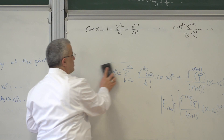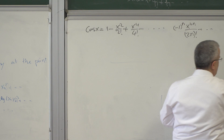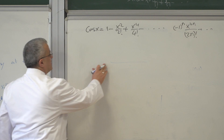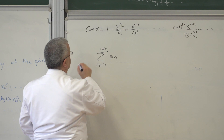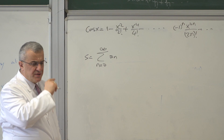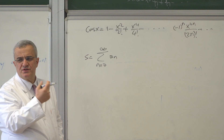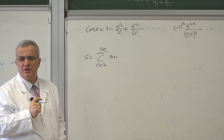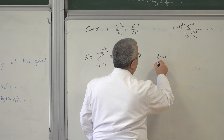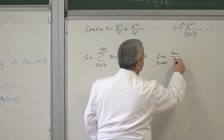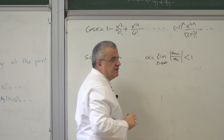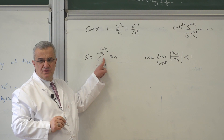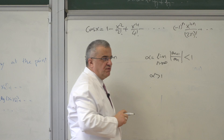Now, did you learn about series — number series, their convergence? When you have a series Σaₙ, we have some convergence criteria. One is: compute the limit as n→∞ of |aₙ₊₁/aₙ|, call this α. If α < 1, this series is absolutely convergent. If α > 1, it is divergent. If α = 1, we don't know. There is another criterion: β = limit as n→∞ of the n-th root of |aₙ|. Again, if this is less than 1, it is convergent.